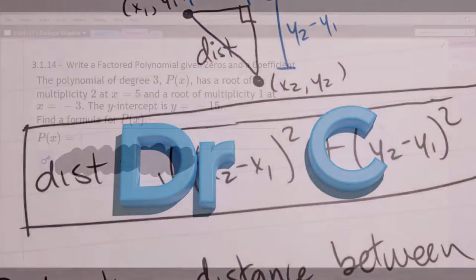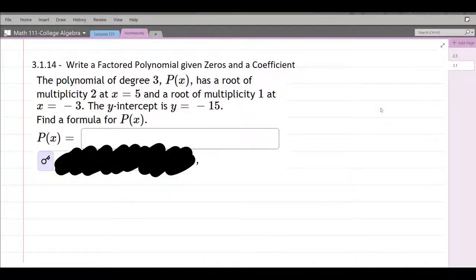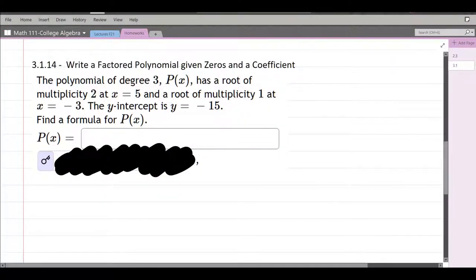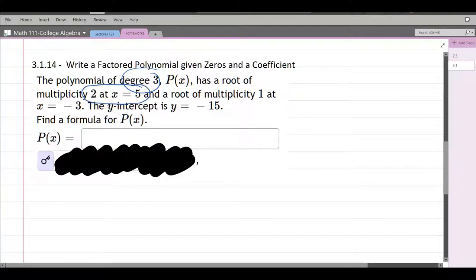Here we're going to find a polynomial given zeros and the leading coefficient. They tell us the degree of the polynomial is 3, and they gave us only 2 roots. However, there are different multiplicities: multiplicity 2 at x equals 5, and multiplicity 1 at x equals negative 3.